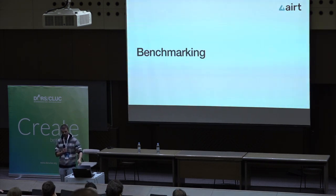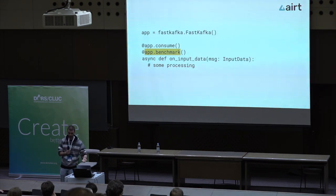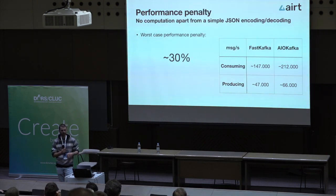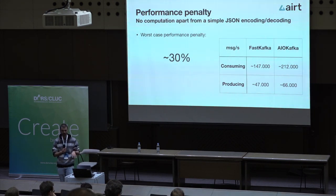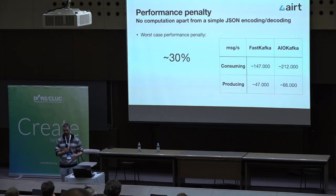Now for benchmarking. We developed a benchmark decorator to make it easier to measure performance. We benchmarked ourselves against raw AIO-Kafka since we use it in the background, and we wanted to know how much overhead our implementation adds. In our case, it's around 30% lower speed than naked AIO-Kafka. This is the worst-case performance penalty because our consuming and producing functions are essentially no-ops in the benchmark. This 30% degradation is mostly due to encoding and decoding of JSONs.